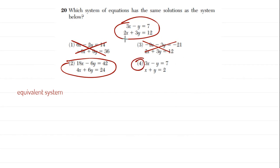You can verify number four has an error — they multiplied some terms by the wrong value. For equivalent systems, you need to multiply both sides of an equation by the same thing, or add the same thing to both sides. You can do this to just one equation or both, and that gives you an equivalent system with the same solutions. If you're not comfortable with this, look it up and get some practice.